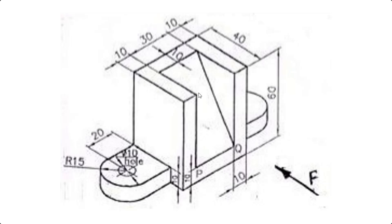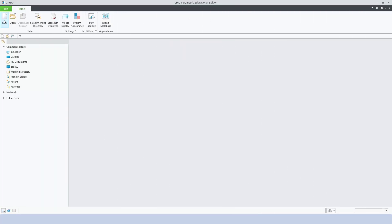So modeling a rectangular block is easy — you can model it in a single feature. Then if you remove the particular slanting area, this component will be obtained. We have to draw those lines carefully. The rectangle dimensions: it is 30 + 10 + 10, so totally 50, and the other side is 40 — so 50 by 40. We will create a rectangle for 50 by 40 and extrude it for a height of 60.